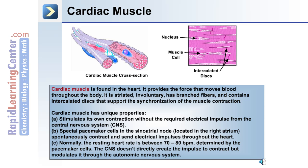Cardiac muscle is the third type of muscle in the body and is found only in the heart. It provides the force that moves blood throughout the body. Cardiac muscle is striated, involuntary, and has branched fibers. It also contains intercalated discs that support the synchronization of muscle contraction.